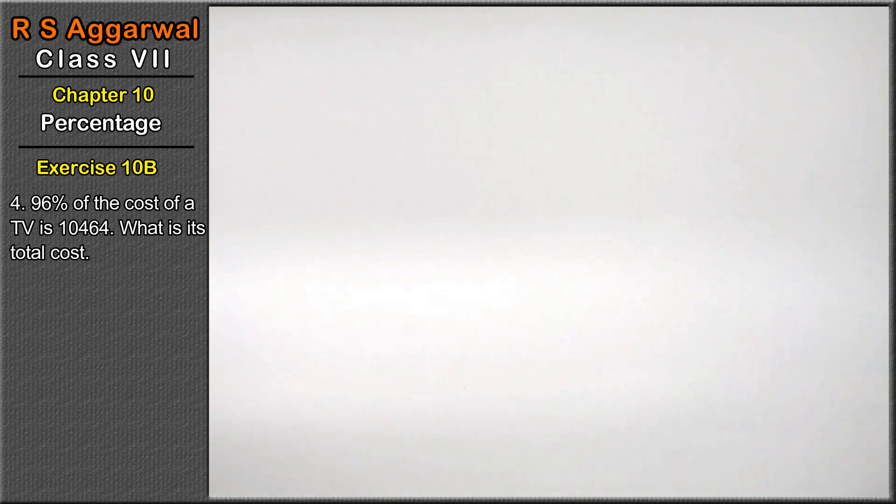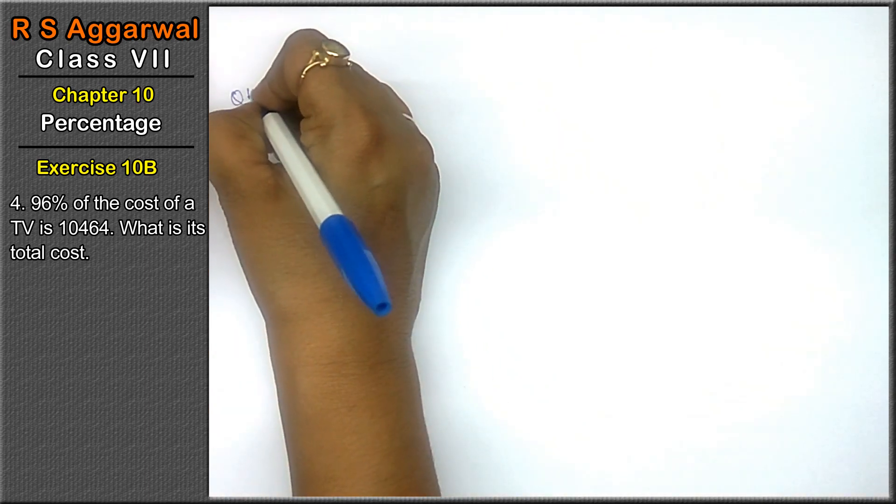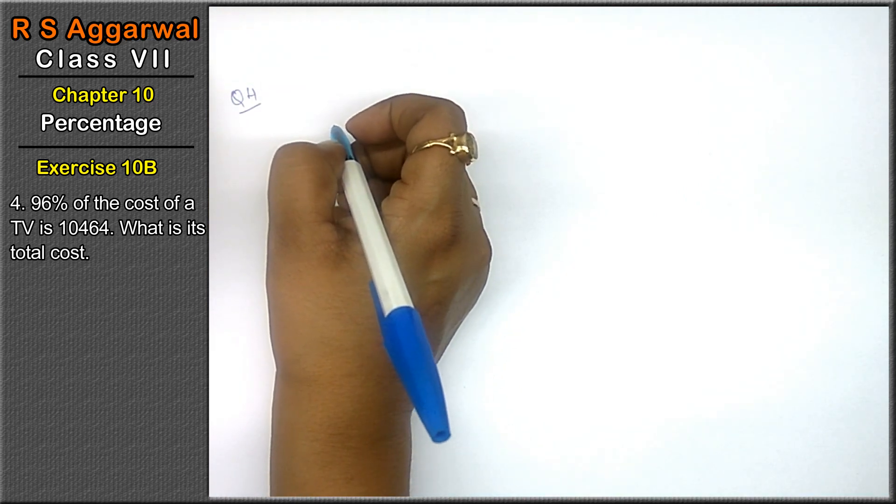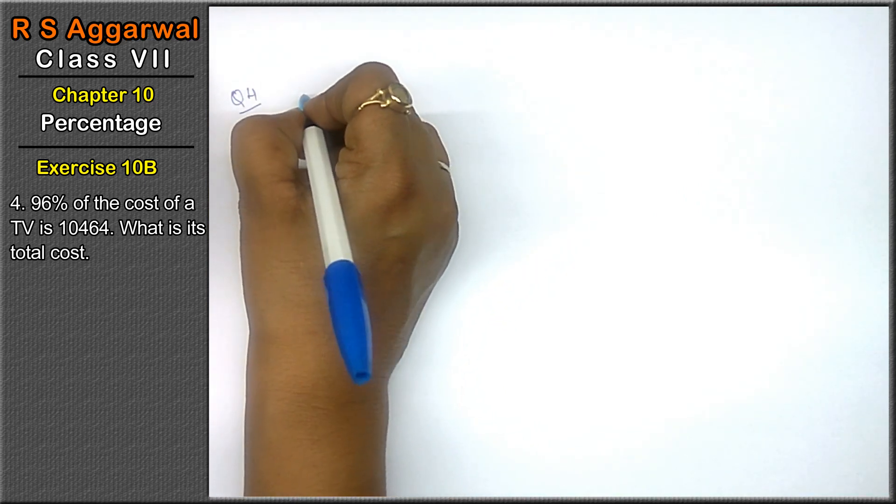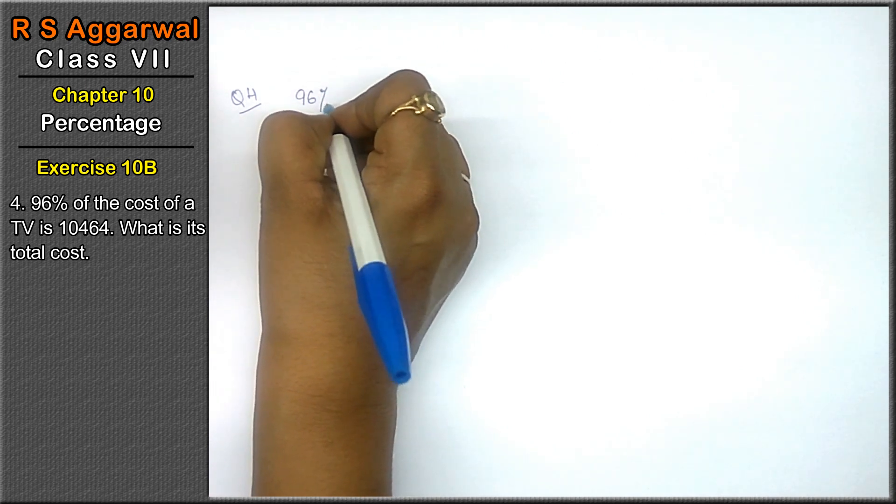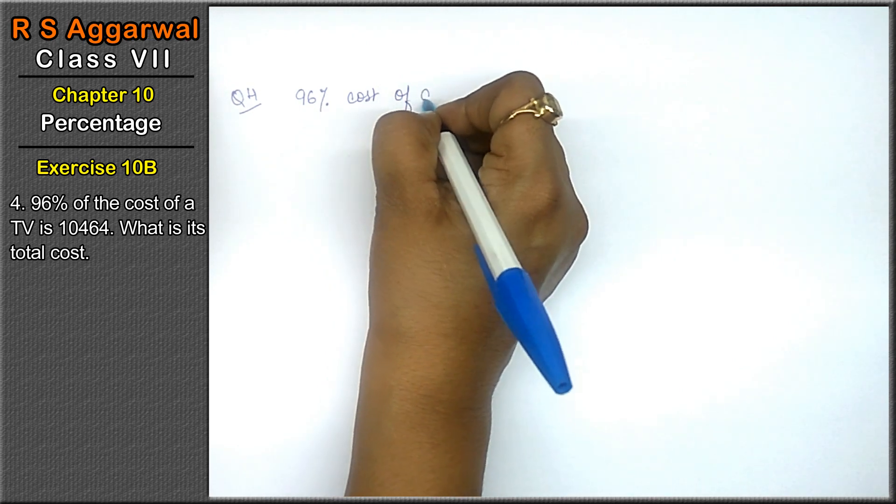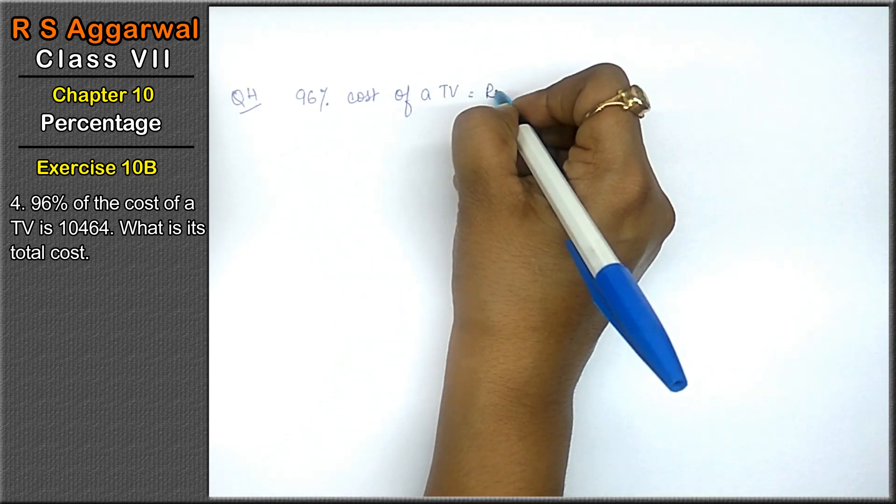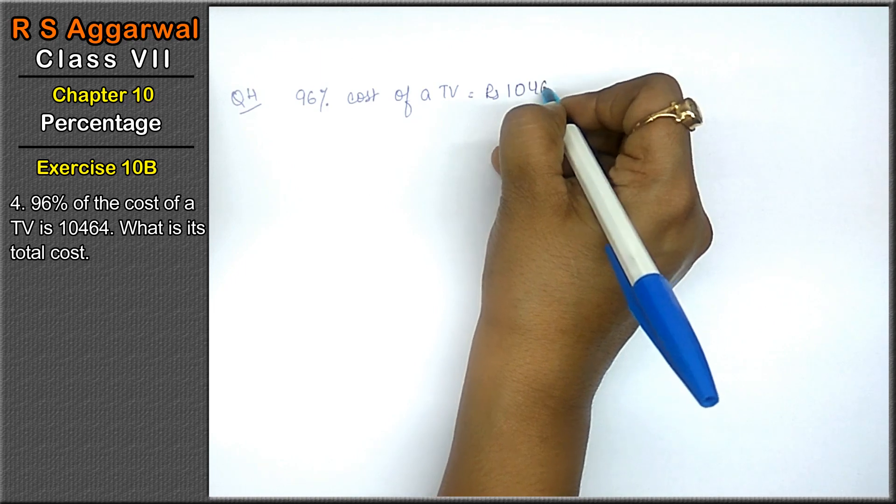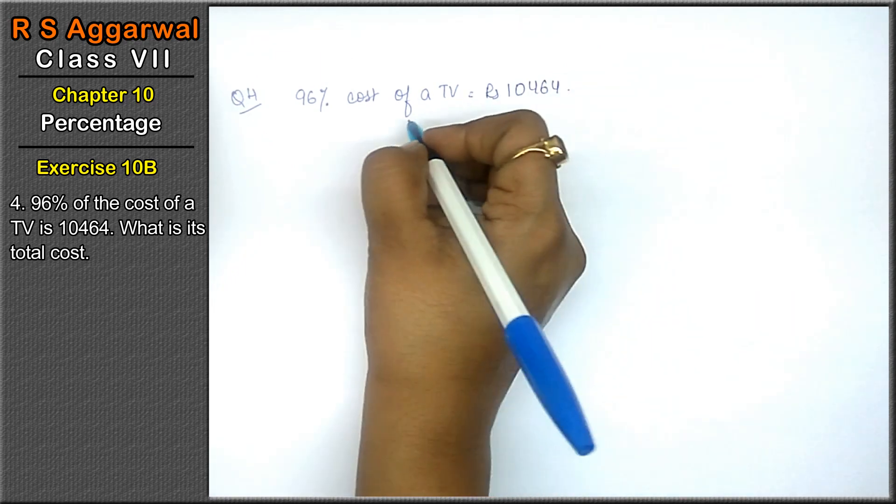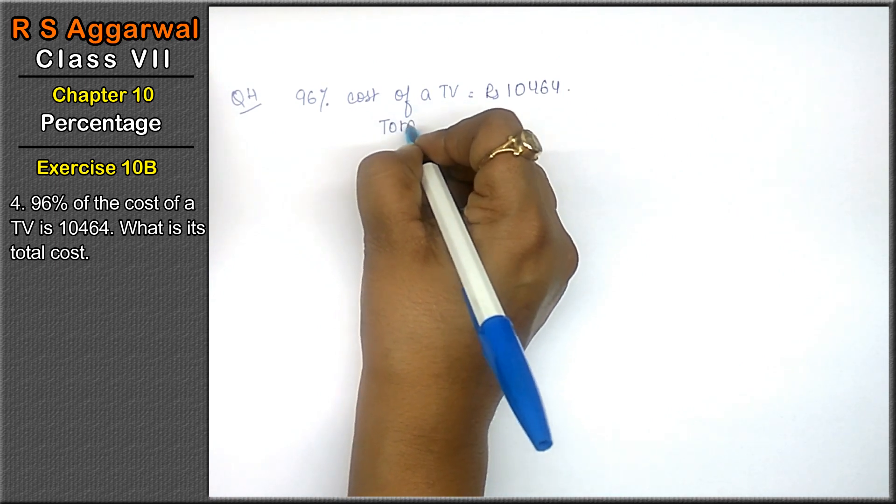Let's do question number 4 of exercise 10B, that is percentage. 96% of the cost of a TV is equals to rupees 10,464. What is its total cost? We have to find out the total cost.